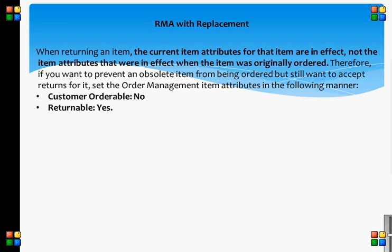When returning an item, the current item attributes for that item are in effect, not the item attributes that were in effect when the item was originally ordered. Therefore, if you want to prevent an obsolete item from being ordered but still want to accept returns for it, set the Order Management item attributes as follows: Customer Orderable = No, Returnable = Yes.